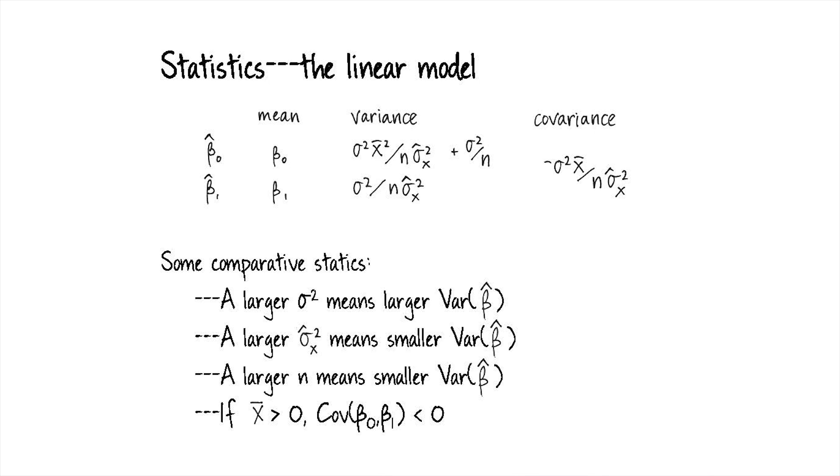So I list them here and I'll go through each one separately. If we have a larger σ², imagine having two different data sets that are identical except one has a larger error variance.